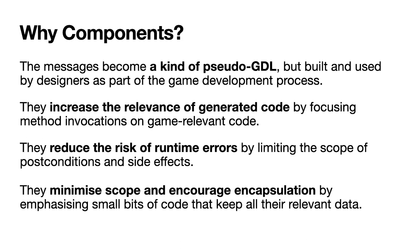These messages end up acting as a kind of pseudo game design language, except it's one that's been designed by the actual game developers and is being used by them elsewhere in their own hand-designed code. The code generated inside a component is also more likely to be relevant because when you send a message it's targeting some aspect of the game simulation, making it more likely to have a measurable impact and be evaluated as good or bad. Components also reduce the risk of runtime errors because the default behavior in a message-based system is to ignore a message — if you send a message to the wrong object, it just won't do anything. Finally, they minimize scope: many components in a systems-driven roguelike can be very short — five, ten, fifteen lines of code — defining very simple, focused, encapsulated concepts, which is exactly what you want in an ECS system. That means our AGD system can have a large impact without writing a lot of code.